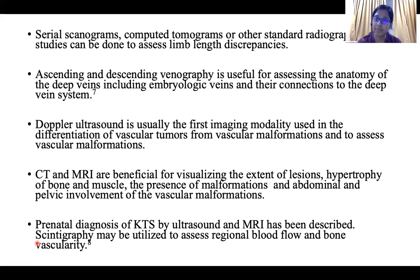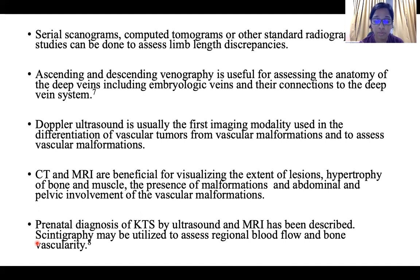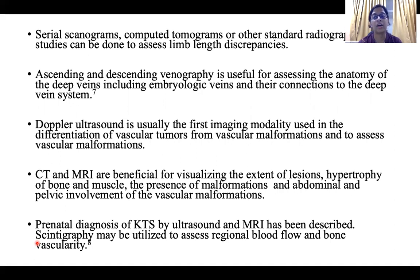Ultrasound is usually the first imaging modality used for differentiating vascular tumors from vascular malformations and to assess these malformations. CT and MRI are beneficial for visualizing the extent of these lesions, hypertrophy of muscles or bone, or presence of malformations and abdominal-pelvic involvement. Prenatal diagnosis of KTS by ultrasound and MRI has also been described in various articles, and scintigraphy may be utilized to assess regional soft tissue and bone vascularity.